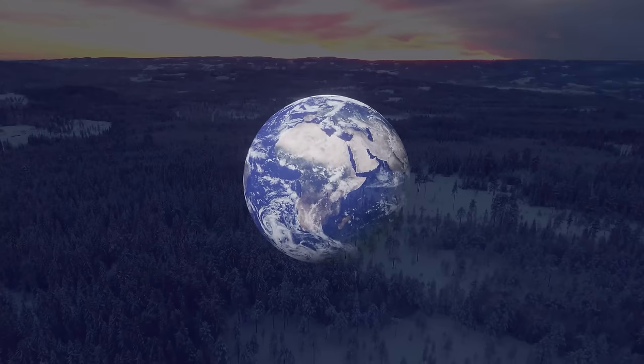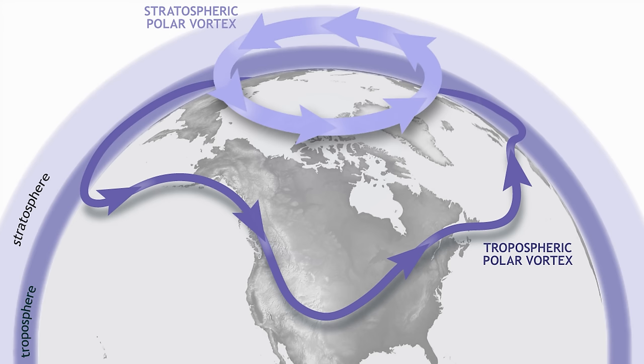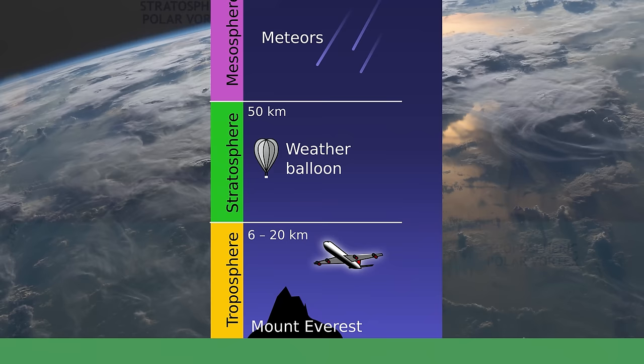There are actually two polar vortexes, one at each pole of the planet. And even there, each vortex comes in two parts: a tropospheric polar vortex spinning in the section of the atmosphere known as the troposphere, from ground level up to about 10 to 15 kilometers. This is where 75% of the total mass of the atmosphere resides.